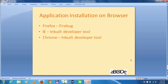Now we are moving ahead with application installation on the browser. IE and Chrome come with a built-in developer tool through which we can locate any element by right-clicking on it and selecting Inspect. But in Firefox we need to install the Firebug plugin, through which we can inspect any element on any web page.